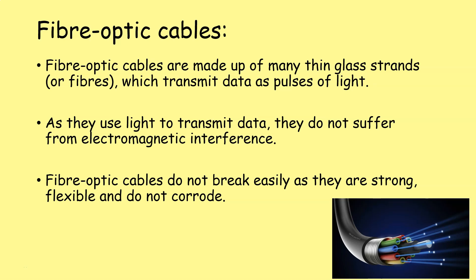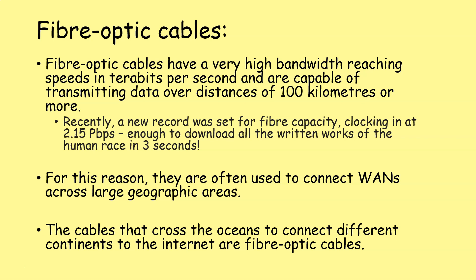Fiber optic cables are made of thin glass strands or fibers which transmit data as pulses of light. As they use light to transmit data, they do not suffer from electromagnetic interference. Fiber optic cables do not break easily as they're strong and pretty flexible, and they don't corrode like copper. Fiber optic cables have very high bandwidth and can reach speeds measured in terabits per second or more, and are capable of transmitting data over distances of 100 kilometers or more. Recently, researchers in a lab achieved a bandwidth of 2.15 petabits per second — enough to download all the written works of the human race in every language in three seconds.